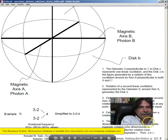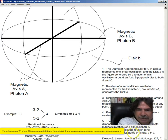Rotation of a second linear oscillation represented by the diameter B around axis A generates the disk B. Disk A may be given a second rotation around axis A, and disk B may be given a second rotation around axis B without interference at any point as long as the rotational speeds are reviewed. Finally, the whole assembly may be given a rotation around the electric axis C.